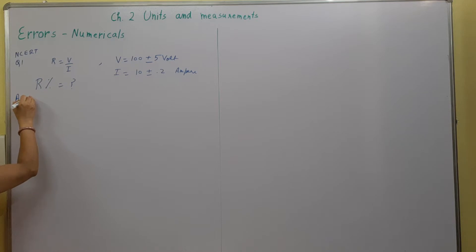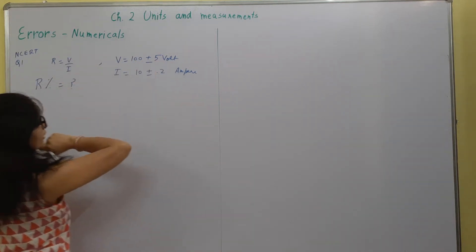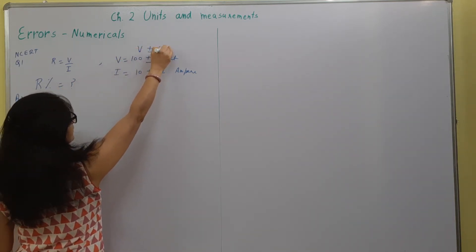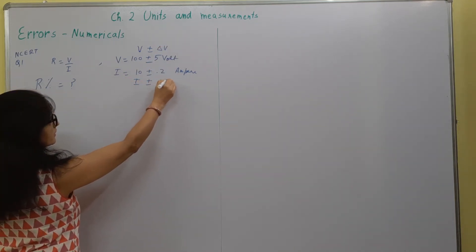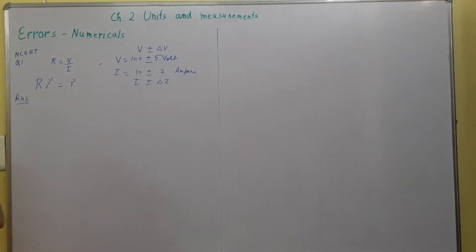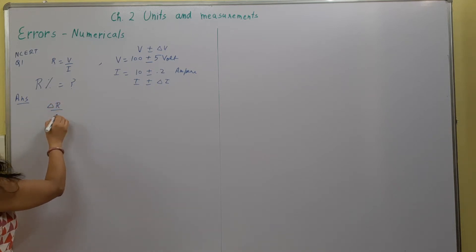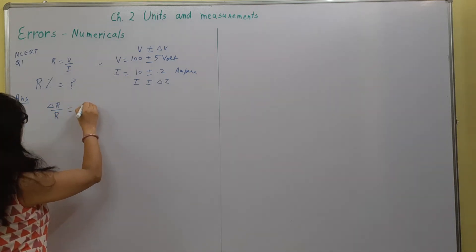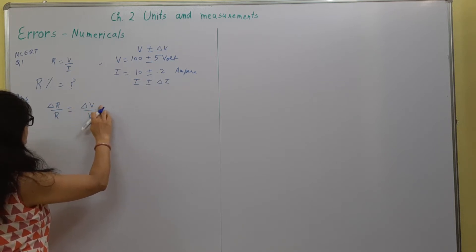You know that if this voltage is written in this form 100 plus minus 5 volt, that means this is the actual value and this is the variation. Now how do we write the expression for percentage error? Here we write delta R upon R is equal to delta V upon V plus delta I upon I, into 100, because we have to calculate the percentage error.